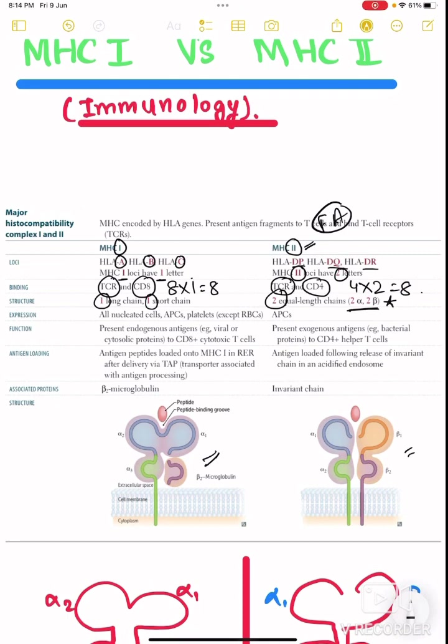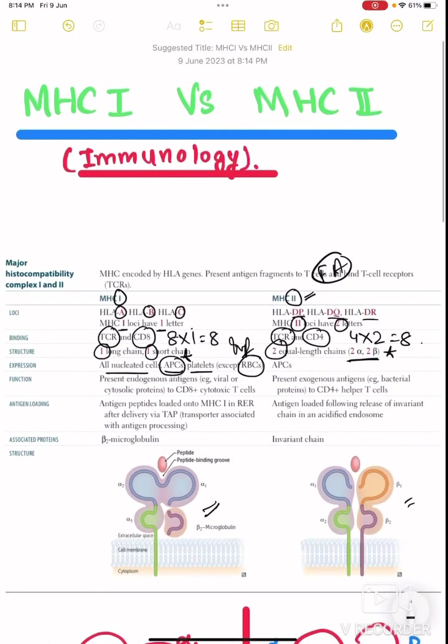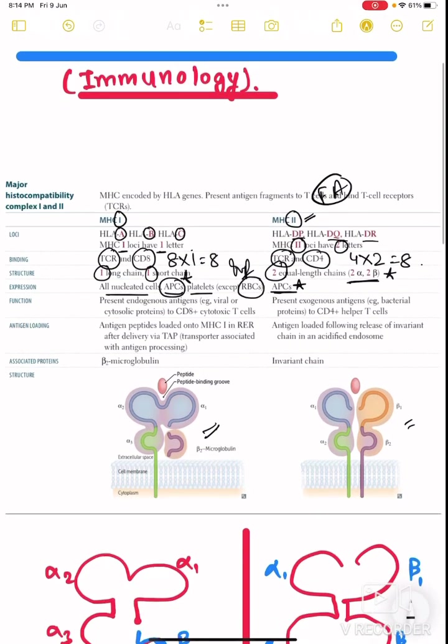Already told that MHC class 1 is just like an Aadhaar card which is given to every citizen of India: all nucleated cells, APCs. Policemen are also a part of India only. Platelets, except RBC. Very important, except RBC. And MHC class 2 is given only to APCs, antigen presenting cells.